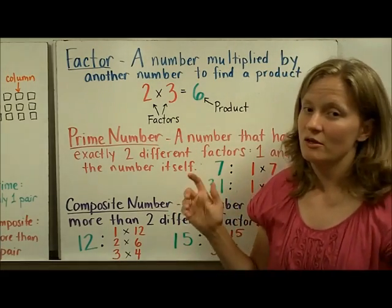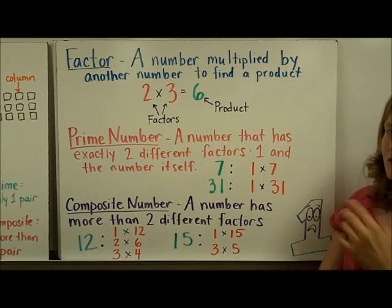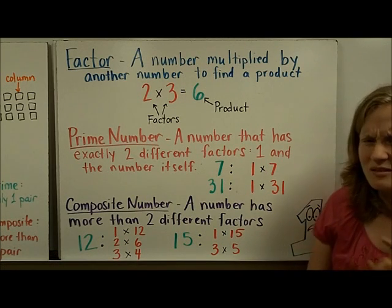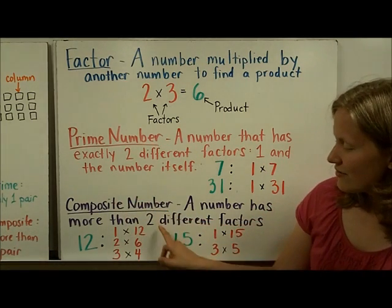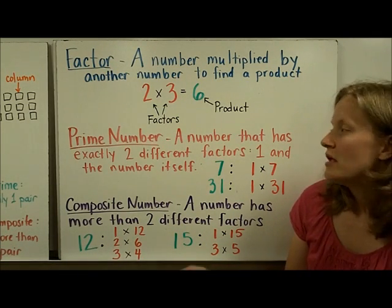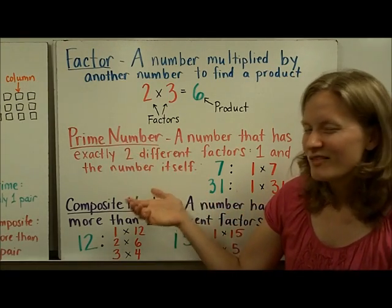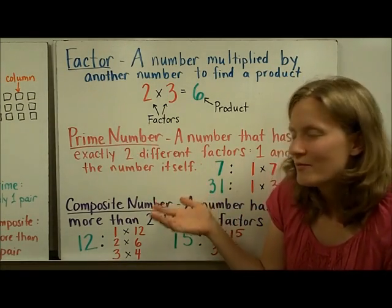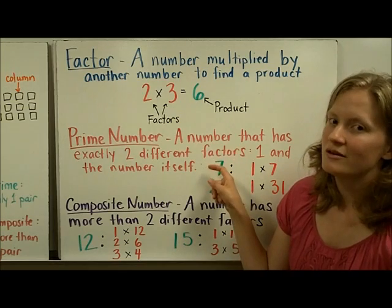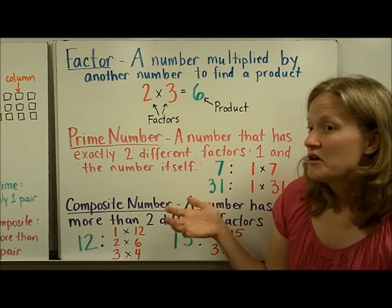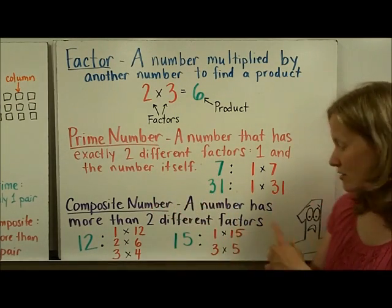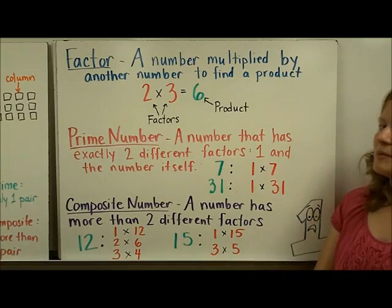But we have one lonely guy here. One is a very lonely number because he is not prime nor composite. And let's see why that makes sense. He definitely doesn't have more than two different factors. The only way to get one is one times one. But for a prime number, the definition, so a lot of people would think one must be a prime number. But let's look again at the definition. It has to have exactly two different factors. Really, the only factor of one is one, and they're not two different numbers. So one is called neither a prime number nor a composite number. It's just neither.